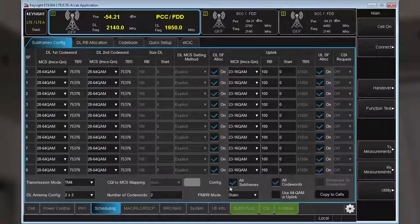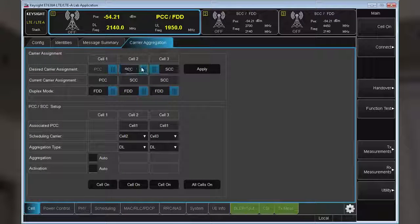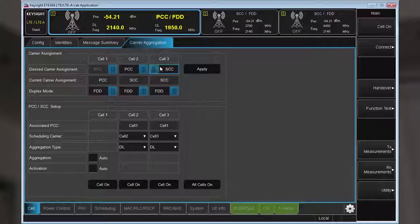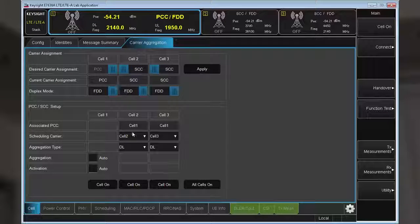The carrier aggregation tab, which can be accessed from any cell, can easily manage all the carriers from a single location. For example, you can set the cell type, primary or secondary, the duplex mode, and even the carrier aggregation for downlink or both downlink and uplink.